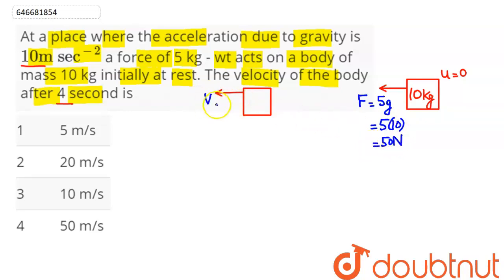Now we need to find the final velocity. The acceleration of this body will be equal to force upon mass. Force is 50, mass is 10. So acceleration comes out to be 5 meter per second square. Initially the body is at rest.